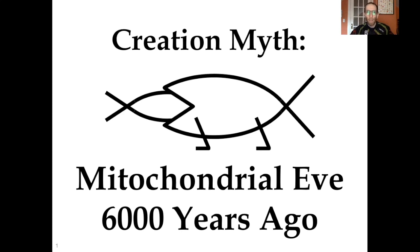Hi everybody, welcome back to Creation Myths. Today we are going to cover another creation myth. This time it's the idea that Mitochondrial Eve, the human mitochondrial most recent common ancestor, existed just 6,000 years ago. This is a pervasive myth among creationists and creation scientists because here we have seemingly robust genetic data that support a young earth timeline. As we'll see, that's not the case at all, so let's get into it.